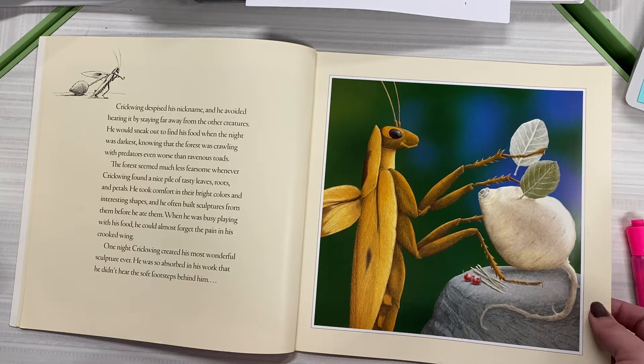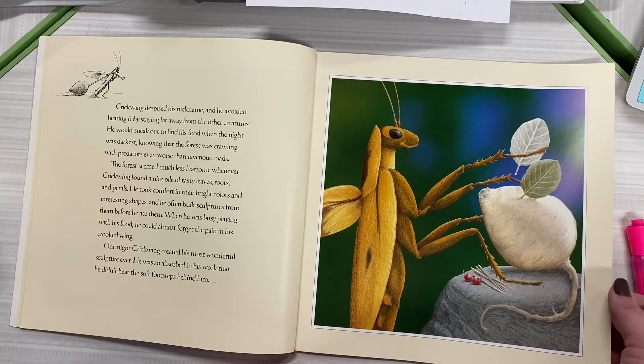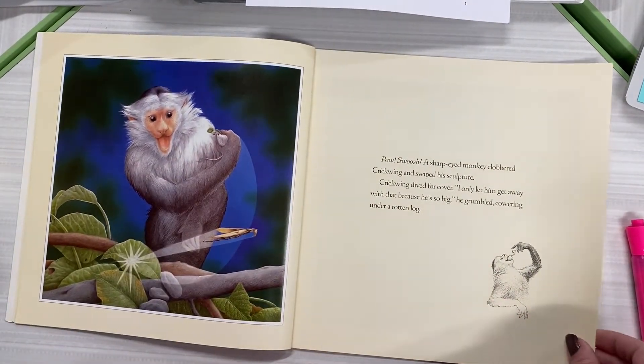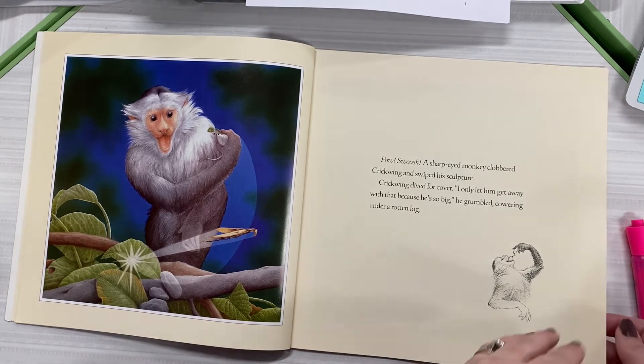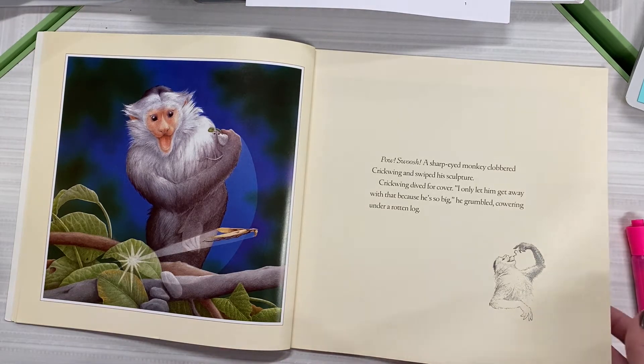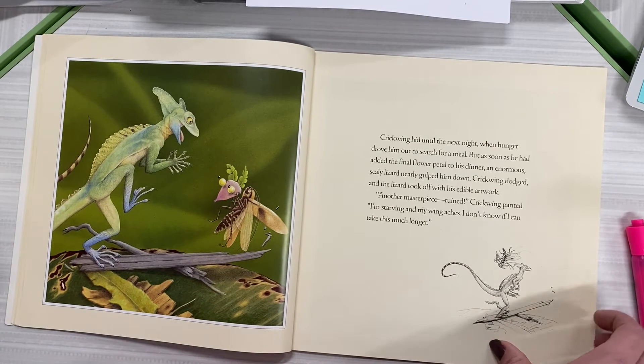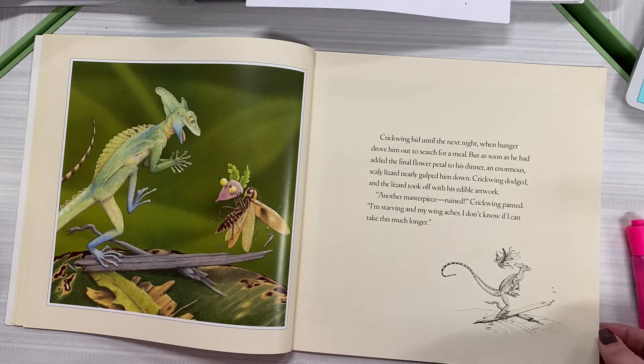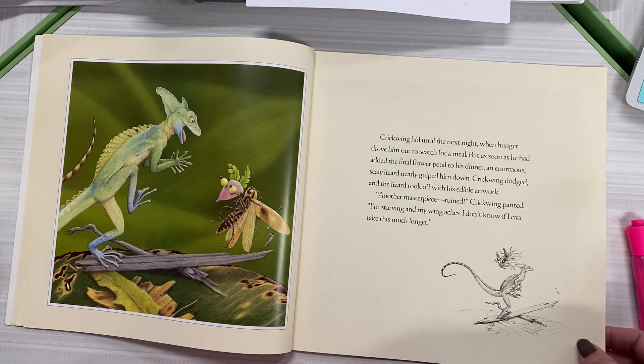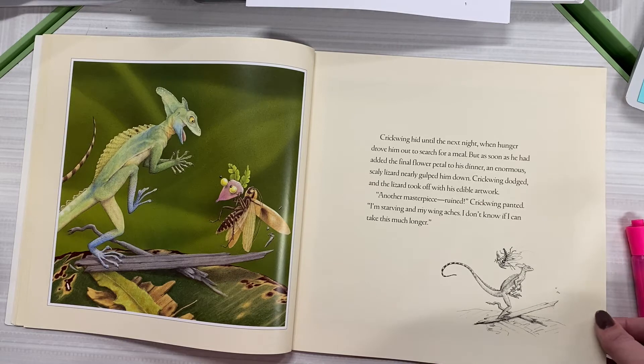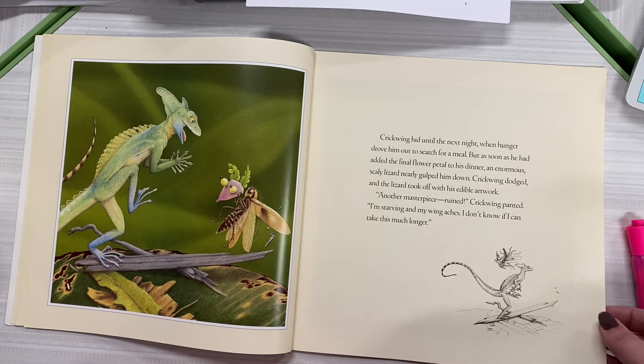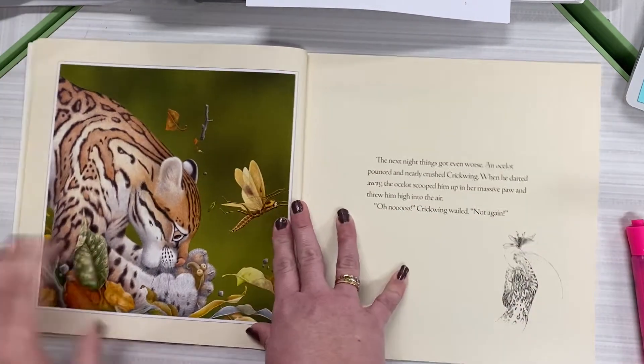When he was busy playing with his food, he could almost forget the pain in his crooked wing. One night, Crickwing created his most wonderful sculpture ever. He was so absorbed in his work that he didn't hear the soft footsteps behind him. Pow! Swish! A sharp-eyed monkey clobbered Crickwing and swiped his sculpture. Crickwing dived for cover. I only let him get away with that because he's so big, he grumbled, cowering under a rotten log. Crickwing hid until the next night when hunger drove him out to the search for a meal. But as soon as he had added the final flower petal to his dinner, an enormous scaly lizard nearly gulped him down. Crickwing dodged and the lizard took off with his edible artwork. Another masterpiece ruined, Crickwing panted. I'm starving and my wing aches. I don't know if I can take this much longer.